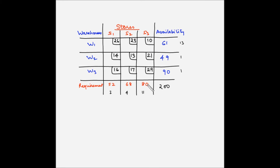The next step is to select the row or column with the largest difference. The first row has the largest difference of 13. We then allocate the maximum number of units to the square with the minimum cost in that row. In row W1, the square W1S3 has the minimum cost of 10. W1 has a supply availability of 61 units while S3 has a demand of 80 units, so the maximum we can allocate is 61 units.